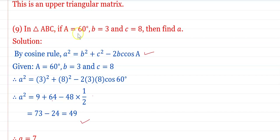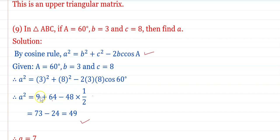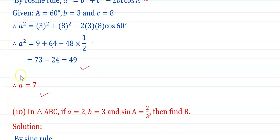In triangle ABC, angle A = 60°, b = 3, c = 8. Find a. By the cosine rule: a² = b² + c² − 2bc·cos A. Substituting: a² = 3² + 8² − 2×3×8×cos 60° = 9 + 64 − 48×(1/2) = 73 − 24 = 49. Taking the square root: a = 7.